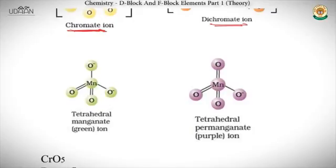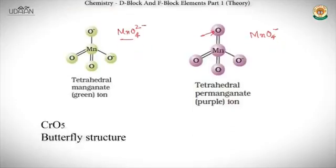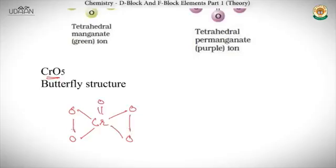MnO₄²⁻ is the manganate ion — it is tetrahedral in structure and green in color. MnO₄⁻ is the permanganate ion — also tetrahedral in structure but purple in color. CrO₅ has a butterfly structure with Cr double-bonded to one oxygen and four peroxo oxygen linkages; its color is violet.